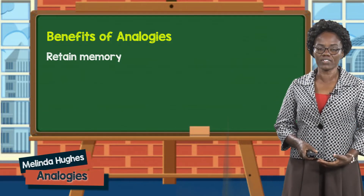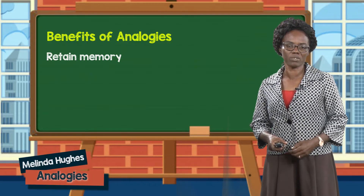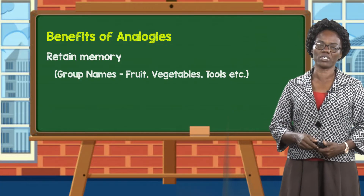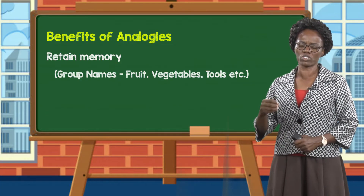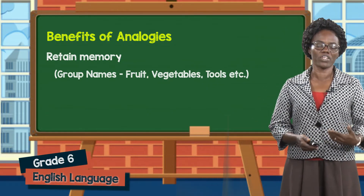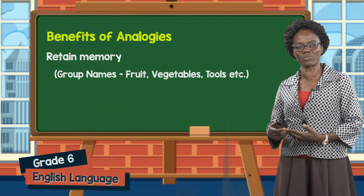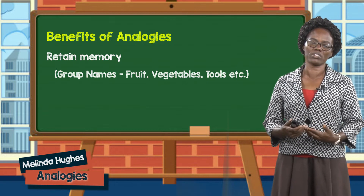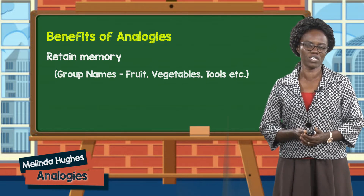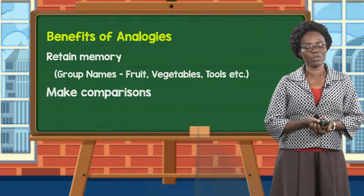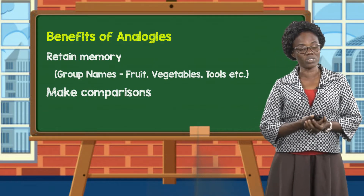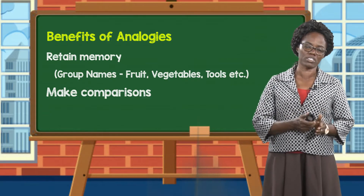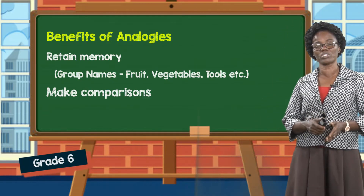Analogies also help learners to retain memory. For example, if you want to memorize collective or group names — such as fruit, vegetables, tools, or furniture — those group names can be retained in your memory by practicing analogies, which give you the opportunity to interplay with your vocabulary skills. Analogies also help learners to make comparisons — comparing group names with body parts, group names with collective names, or diminutives with diminutives.